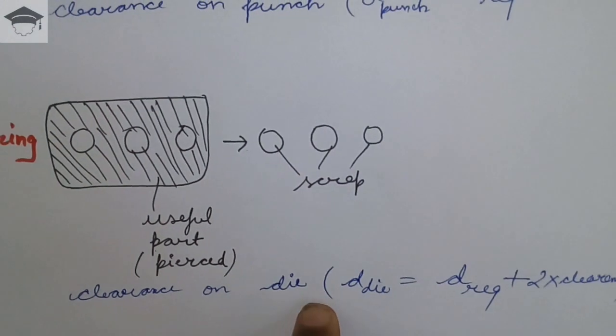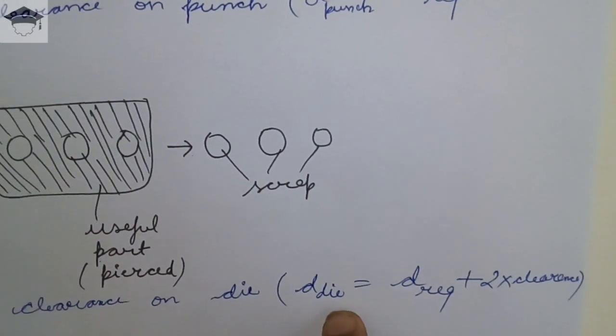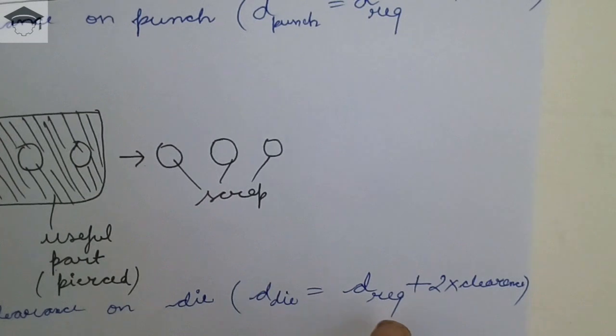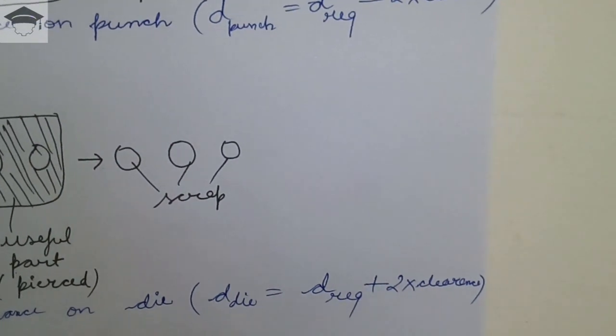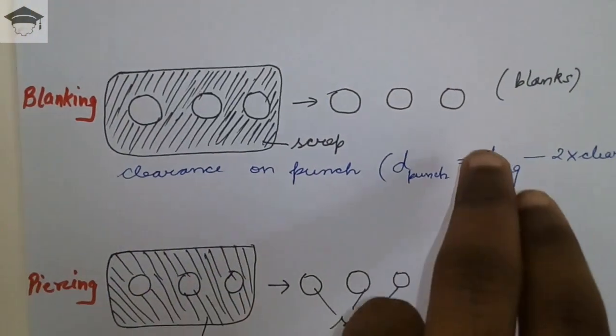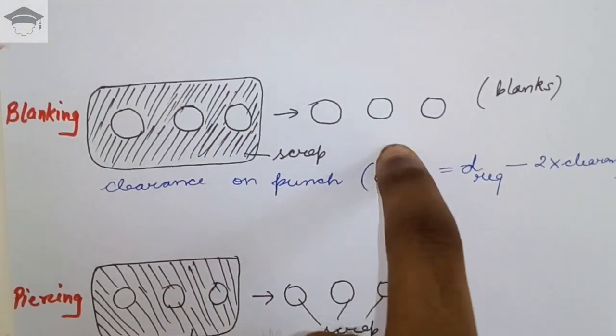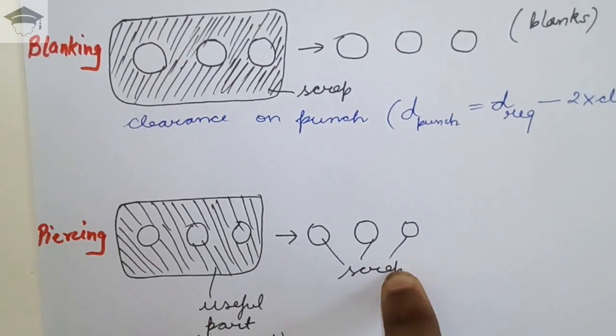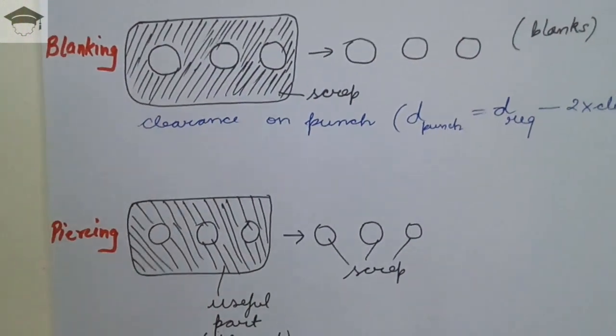Clearance is provided on the die in piercing operation, and the diameter of the die required is the required diameter plus two times the clearance. So the useful part in blanking is the wastage in piercing, and vice versa.